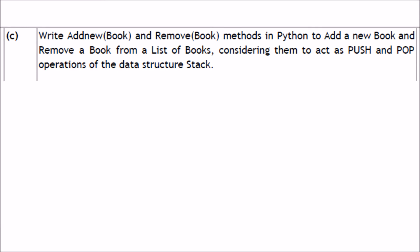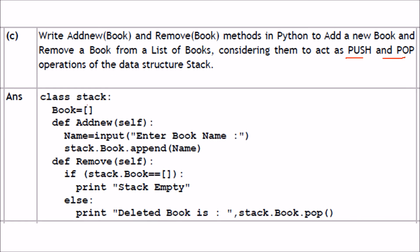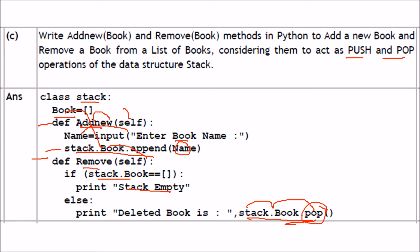Write 'add_new' and 'remove' methods in Python to add a new book and remove a book from a list of books, treating them as push and pop operations of a stack. Define 'add_new(self)': ask the user to input the book name, store it in 'name', then call self.book.append(name). Define 'remove(self)': if the stack is empty, print 'stack is empty'; else call self.book.pop() to remove the top book.